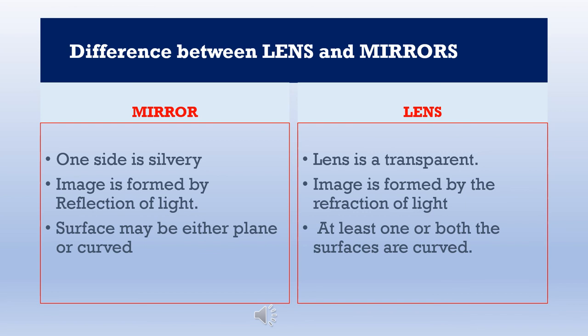Differences between lenses and mirrors: first, in mirrors, the surface is made opaque by coating mercury on one side, whereas a lens is made of transparent material. Second, image formation in mirrors is due to reflection of light, whereas in lenses, the image is formed by refraction of light. Third, a mirror's surface may be either plane or curved, while for a lens, at least one or both surfaces must be curved.